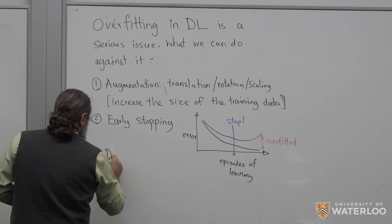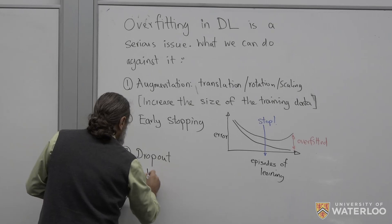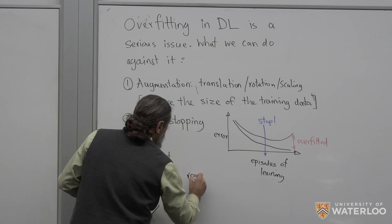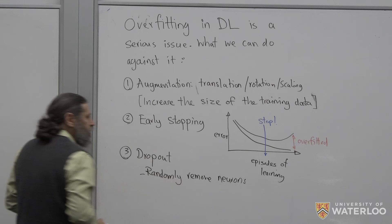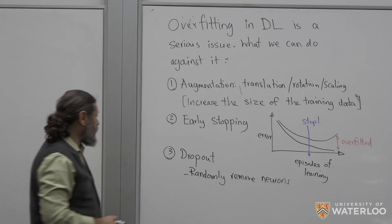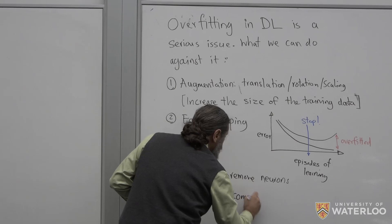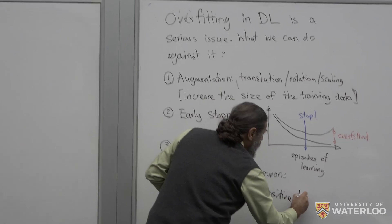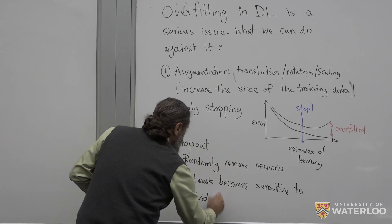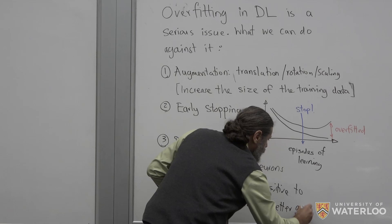A newer technique is dropout. Dropout is one of the techniques people use to combat overfitting in deep learning. Basically, you randomly remove some neurons — if you set the weights or connections of a neuron to zero, you are effectively removing that neuron. What happens is the network becomes more sensitive to individual neurons, and that results in better generalization.